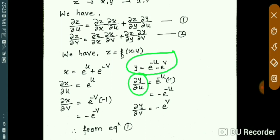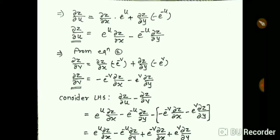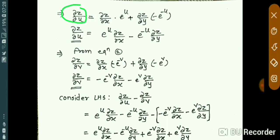Similarly, y = e^(-u) - e^v. Differentiating y with respect to u, keeping v constant, gives -e^(-u). Differentiating y with respect to v, keeping u constant, gives -e^v. Now putting all these values into equation one, we get: ∂z/∂u = (∂z/∂x)(e^u) + (∂z/∂y)(-e^(-u)).